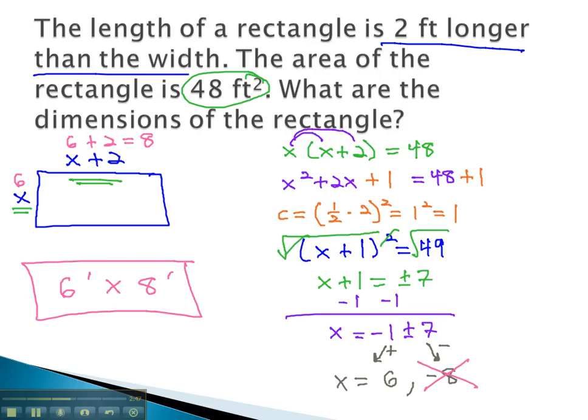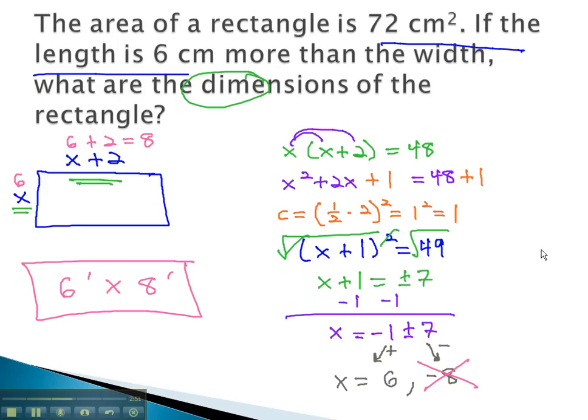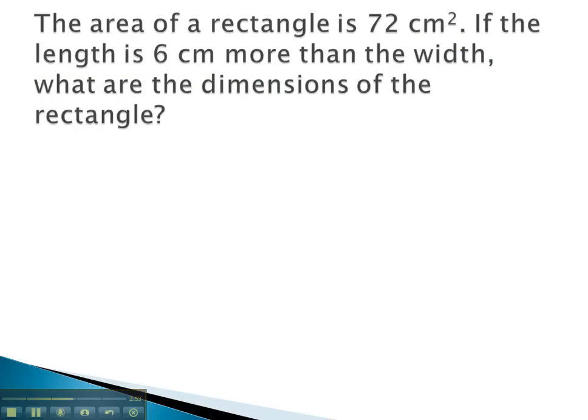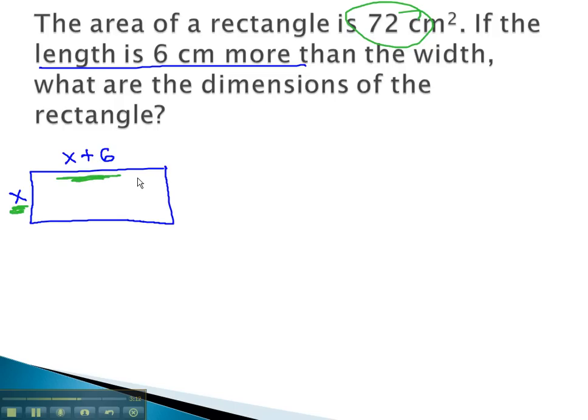Let's take a look at another problem, which gives us a rectangle and the area, and we're asked to find the dimensions. In this problem, we're told the area is 72, but we're also told the length is 6 more than the width. If the width is x, the length would be 6 more, or x plus 6. To find the area of 72, we'll multiply those two values together. x times x plus 6 must equal the area of 72.